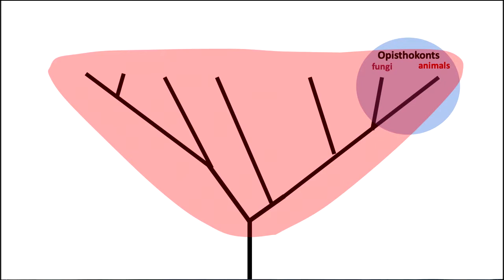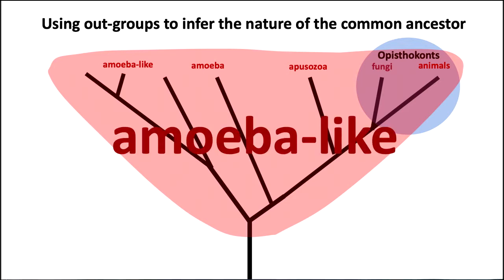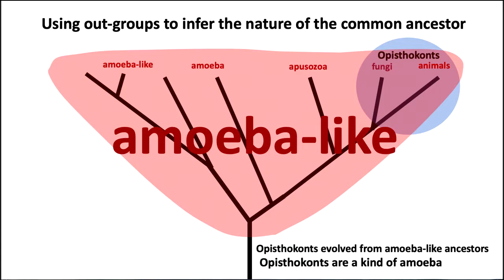Opisthokons, which include fungi and animals — their next group is apusozoa, which look kind of like amoebas, and there are other things that also look like amoebas. Using those outgroups to infer the nature of the common ancestor of fungi and animals, we can say the common ancestors of this whole group are amoeba-like. Opisthokons evolved from amoeba-like ancestors, and opisthokons are a kind of amoeba.